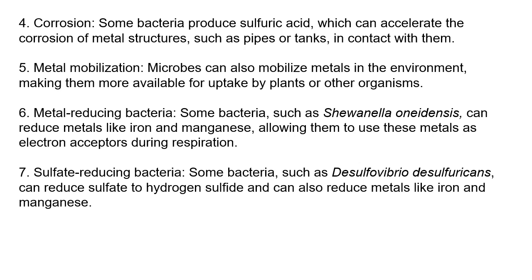Metal reducing bacteria such as Shewanella oneidensis can reduce metals like iron and manganese, allowing them to use these metals as electron acceptors during respiration. Sulfate reducing bacteria like Desulfovibrio desulfuricans can reduce sulfate to hydrogen sulfide and can also reduce metals like iron and manganese. This process can cause metal sulfides to precipitate out of solution, which has important implications for the formation of iron deposits.